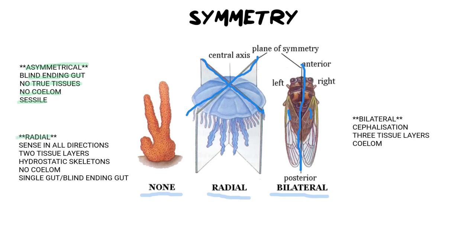In terms of radially symmetrical organisms, we see organisms that can sense in a multitude of directions. They don't necessarily have very specialized sensory organs yet, but they are able to search for food in all directions. They are made out of two tissue layers and often comprise a hydrostatic skeleton, meaning their skeleton is made out of water kept under pressure. Most organisms that are radially symmetrical have to live in water because their body needs to be supported by the water around them. They have no coelom, which means no body cavity and therefore no specialized organs. They also have a single, blind-ending gut.